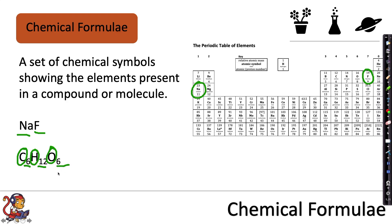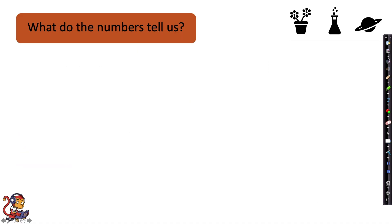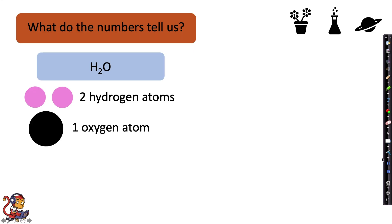We only write these numbers when there is more than one atom of each element. We can also write chemical formulae for molecules. For example, oxygen is O2 and chlorine is Cl2. So what do the numbers tell us? Well, let's take H2O for example. There is number two by the hydrogen and there is no number by the oxygen. This is because we don't write in the number one. So having no number tells us that there is just one atom of oxygen in this compound. So we have two hydrogen atoms and one oxygen atom.